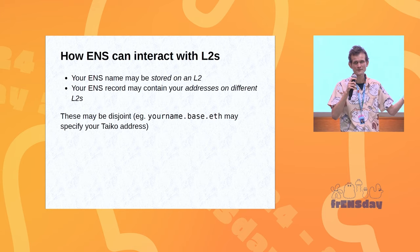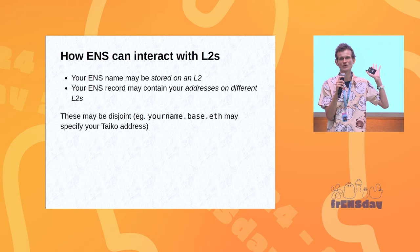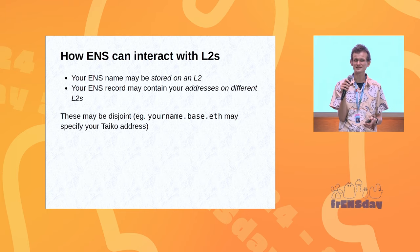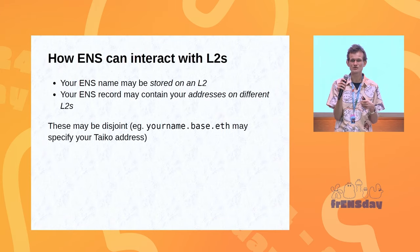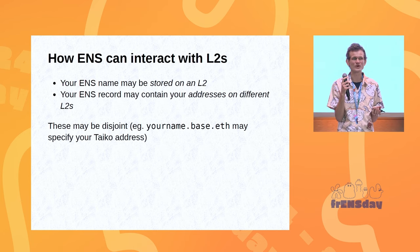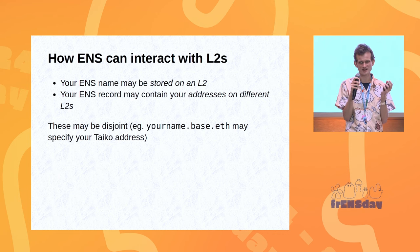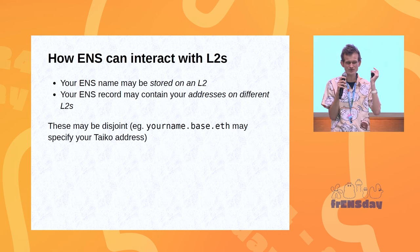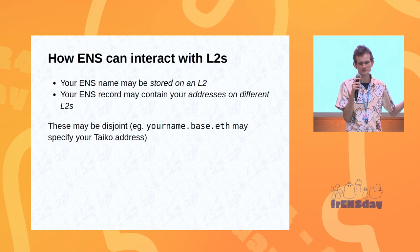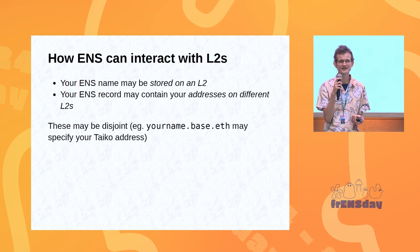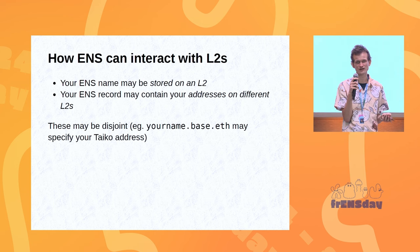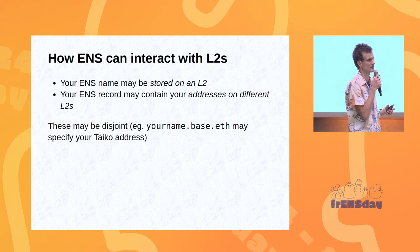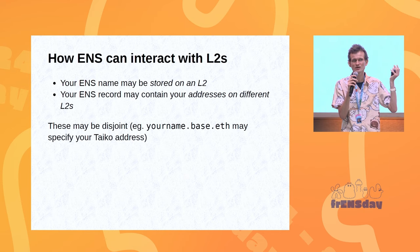That covers the ENS name being stored. The other question is that your ENS name might contain your addresses on different layer twos. We've been in this dreamland mode where you just assume your address is the same everywhere — that's okay for some things, but there are going to be edge cases, especially as smart contract wallets become more prevalent. If you want smart contract wallets to be more prevalent, then your ENS address record might end up being different on different chains. Solutions to this problem are going to be nicely forward-compatible with other things we need to do anyway.